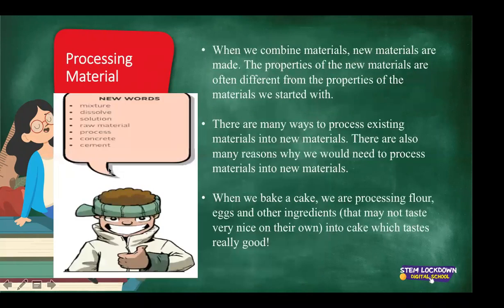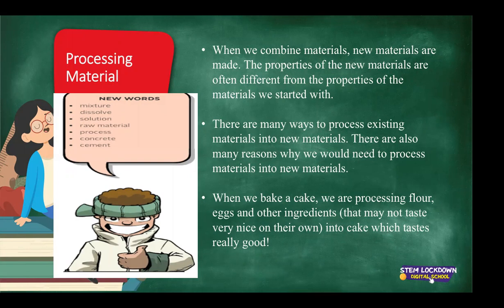Today you are going to learn the following vocabulary: mixture, dissolve, solution, raw materials, process, concrete, and cement. When we combine materials, new materials are made. For example, if we want to bake a cake, we combine different raw materials — your flour, your egg, your baking powder, and sugar — and we combine them with whatever ingredients we desire in order for the final outcome to be as perfect as possible.